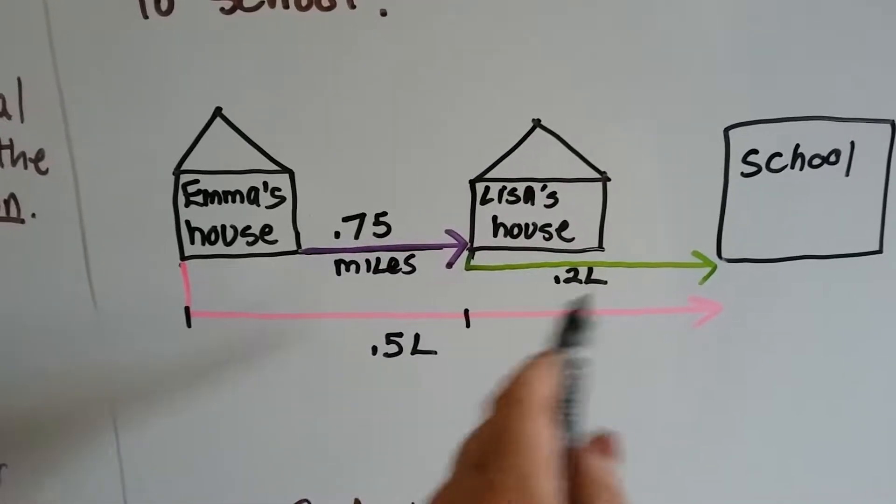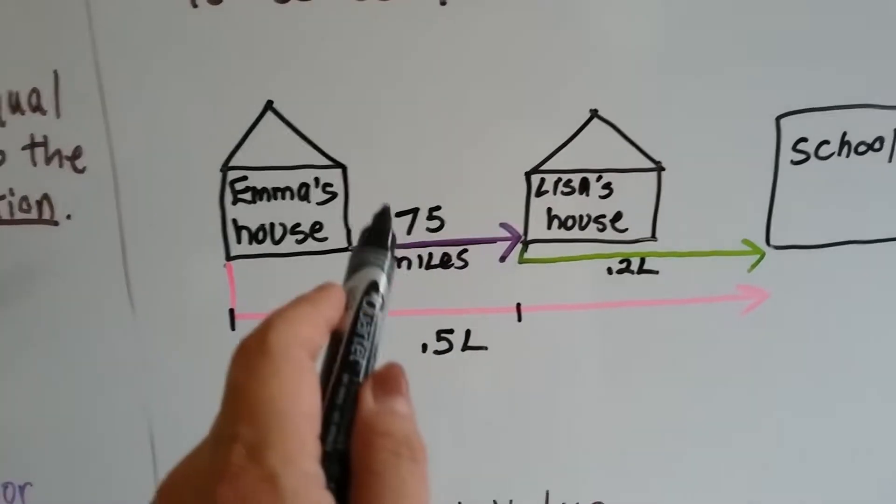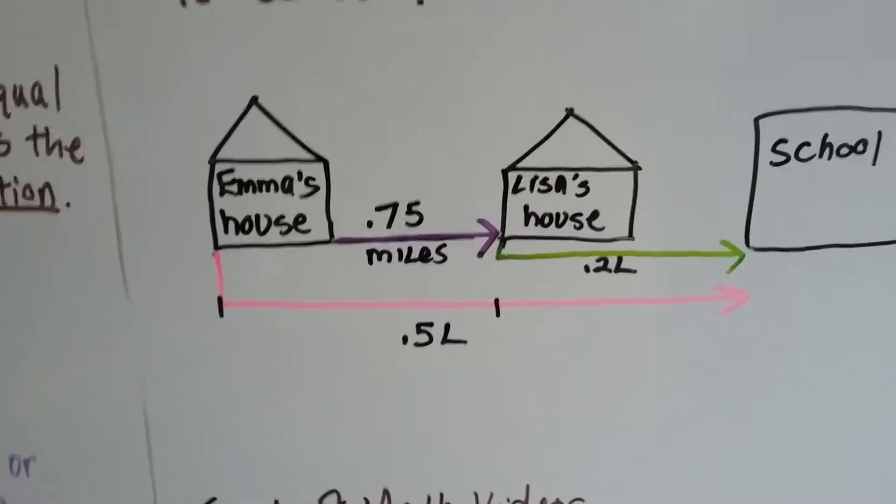So we don't need to know that though. We could figure that out if we wanted to. But we're going to write an equation from the .75 miles, the 2 tenths of an hour, and the 5 tenths of an hour.